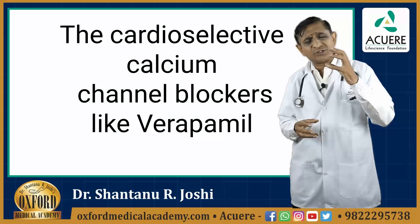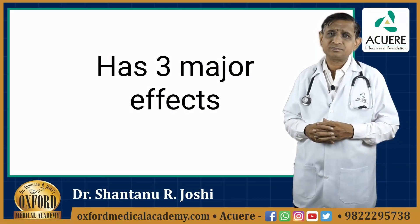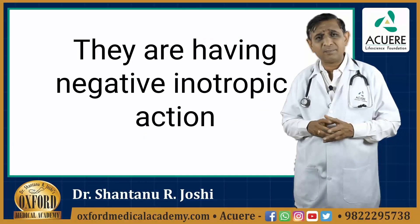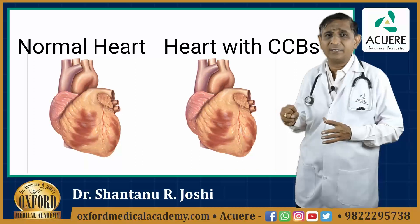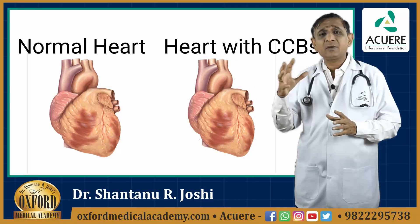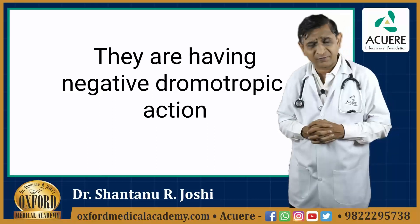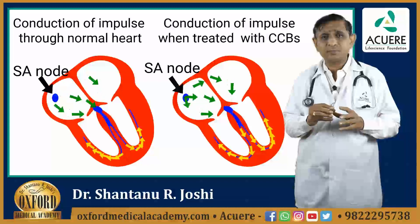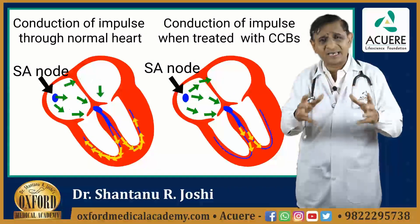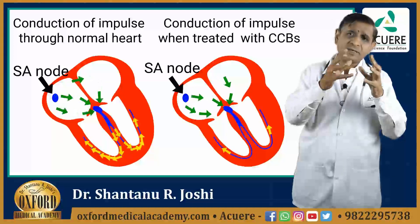The cardioselective calcium channel blockers like Verapamil have three major effects. They have negative inotropic action, meaning they reduce the force of contraction of the heart. They have negative chronotropic action, reducing the heart rate. And they have negative dromotropic action — they reduce the impulse conduction through the bundle of His, the right and left branches, and the Purkinje fibers, all of which is calcium-dependent. This negative dromotropic action also reduces conduction and has a negative effect on the heart rate.